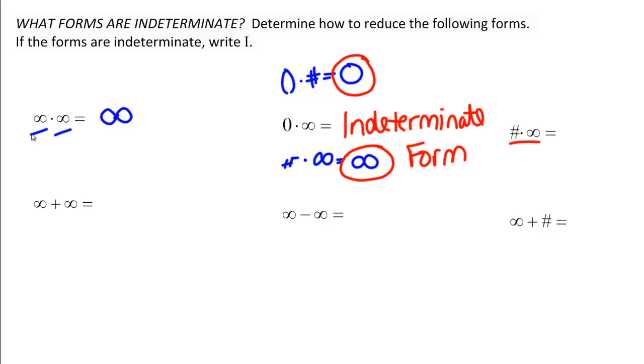A non-zero number times infinity though, we take the biggest number you can think of, multiply it by 5, still the biggest number you can think of, so that one isn't a problem. That one's infinity.